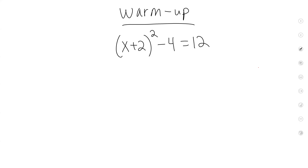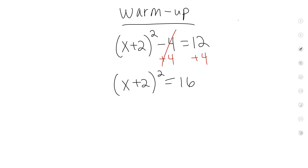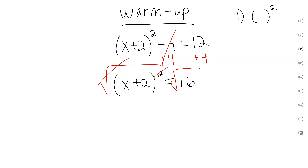Let's go ahead and do the warm-up problem. You should have added 4 on both sides. 12 plus 4 is 16. That's step one — to make sure that this is by itself. There is nothing outside of the parentheses and the squared. Now we're going to go ahead and square root both sides. This is a mistake that I saw a lot of people make on the quiz: they only square rooted one side and canceled it out, but they did not do the other side — they just kept it as 16.